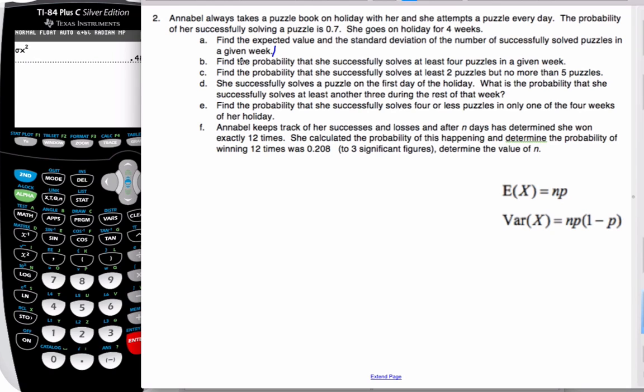So we have to go through our conditions, and I know it's success-failure because she solves it or not. This probability is consistent from puzzle to puzzle, and there's one week, so that's seven days. So it is a binomial situation. So I'll introduce my binomial. X belongs to binomial, where n is seven days a week, and p is 0.7 for success.